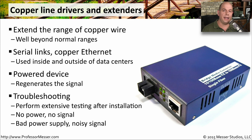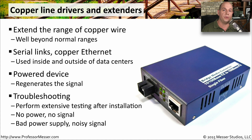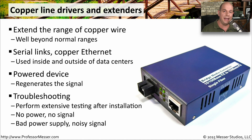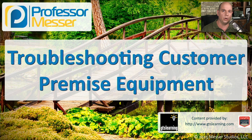Although these devices provide an important capability for extending networks over very long distances, they can occasionally have problems. If you need to troubleshoot one of these line drivers or line extenders, test after you install it and make sure you're able to send traffic through without any errors. If you're not getting any signal across the link, check that the device is powered up, since it relies on power to regenerate the signal. A bad or noisy power supply can also introduce errors onto the network media, so make sure every component within the line driver is working optimally.